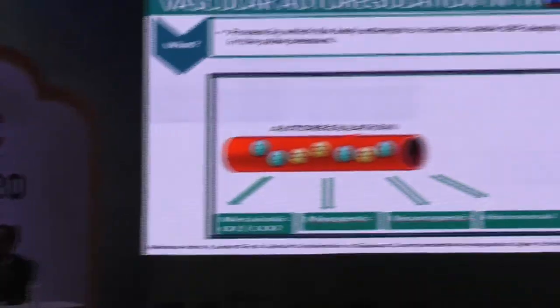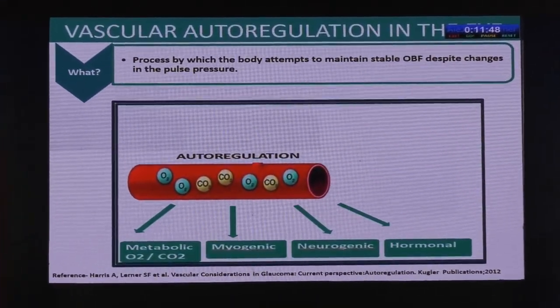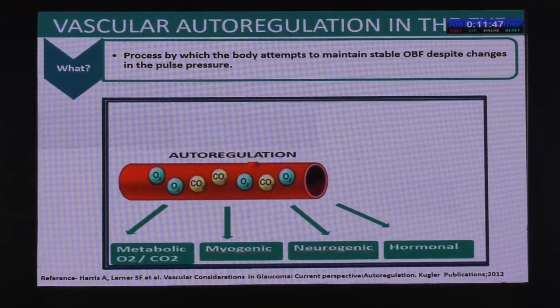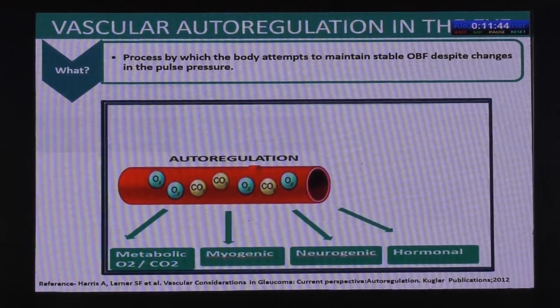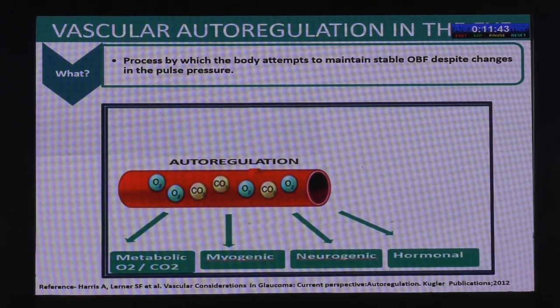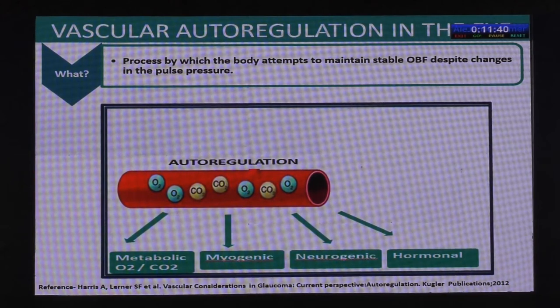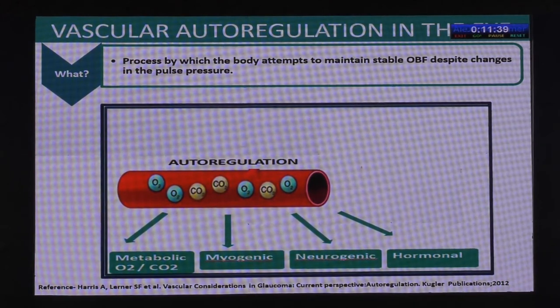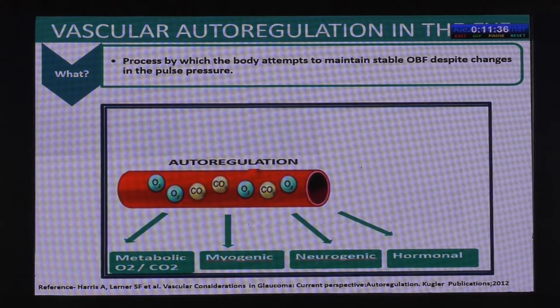Vascular autoregulation is a process by which the body attempts to maintain a stable ocular blood flow despite changes in pulse pressure. The eye tries to maintain constant blood flow at all times, and this is primarily achieved through the metabolic mechanism — the concentration of oxygen and carbon dioxide — and the myogenic mechanism.